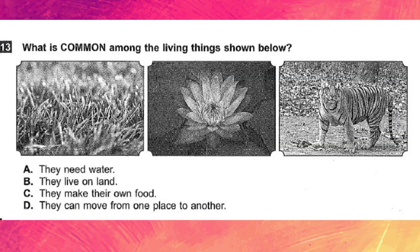Let's review a past ASSET exam question on the topic of living and non-living things. What is common among the living things shown below? A: They need water. B: They live on land. C: They make their own food. D: They can move from one place to another. Option D: All living things show movement, but plants cannot move from one place to another — they show movement only in their body parts. Option C: Tigers don't make their own food. Option B: Lotus are aquatic plants. Option A: They need water — yes! The correct answer is A — all living things need water.